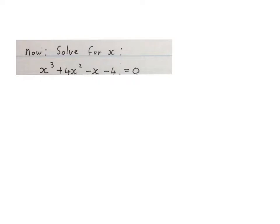Here is our first cubic equation that we want to solve. The first rule is we take everything to one side where the x cubed is positive. Then we put it in descending order — x cubed, x squared, x, constant — and equate it to zero.